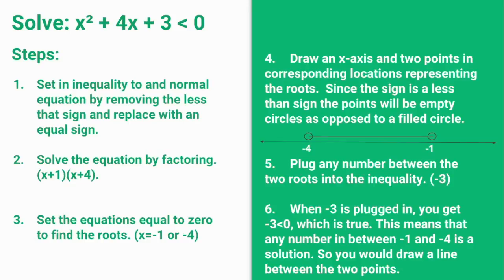Now we are going to draw an x-axis and label negative 4 and negative 1 as our points. Since the equation is less than and not less than or equal to, we are going to leave the circles as not filled — they are empty circles. Negative 4 will be on the left and negative 1 will be on the right.